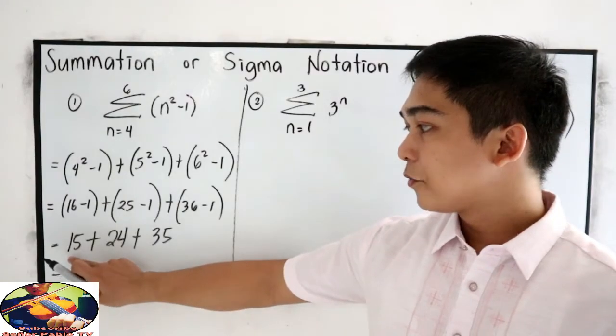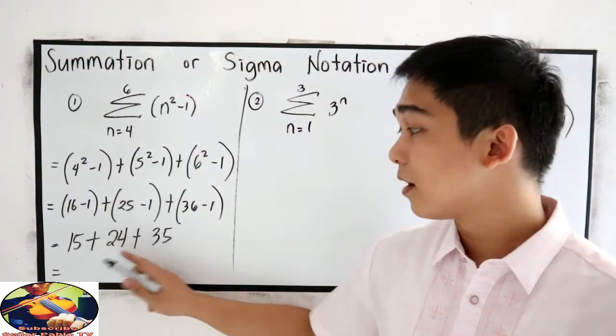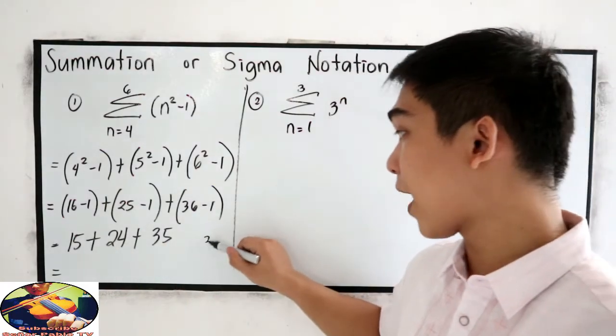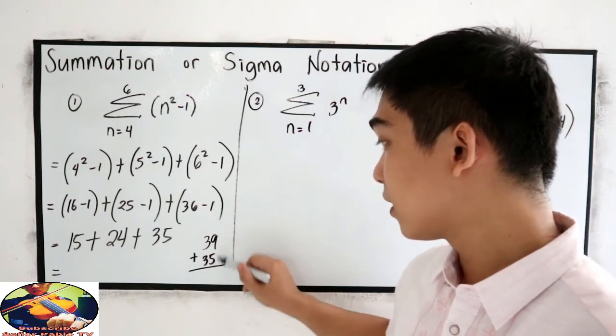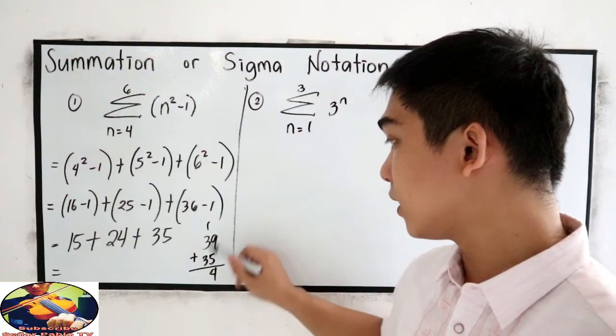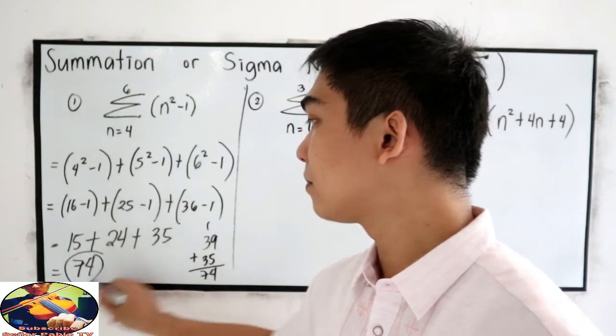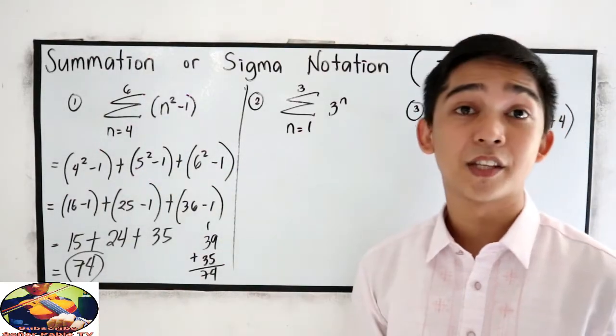Which is 35. 15 plus 24, that is 39. 39 plus, sorry, plus 35. So 4, carry 1, 74. So the sum of this sigma notation is 74.